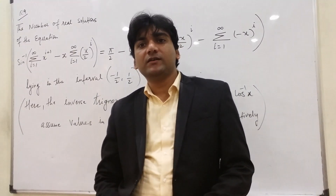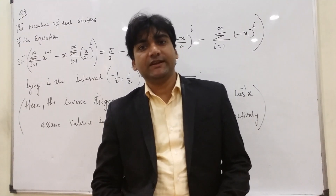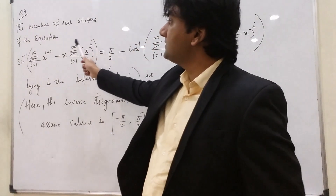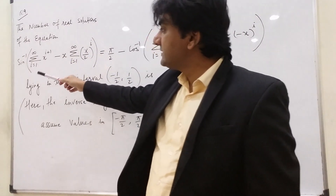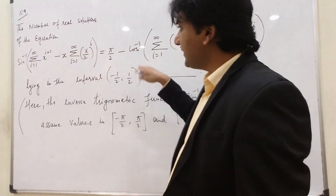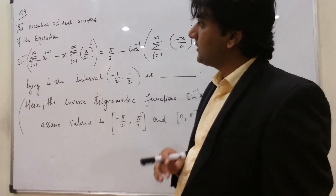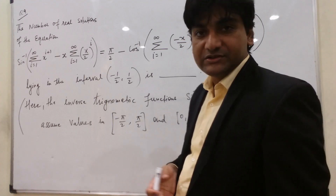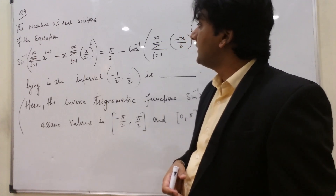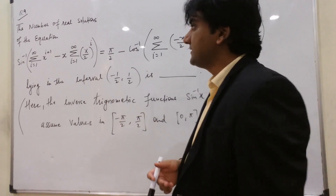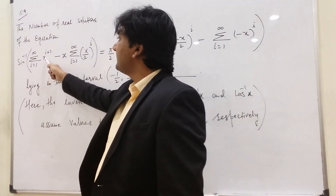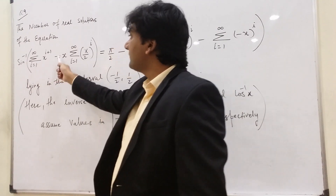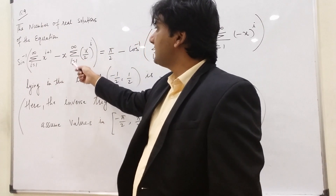Now we are going to learn question number 9 from 2018 JEE Advanced Paper 1 — the number of real solutions of the equation sine inverse. In this question they have applied the concept of inverse trigonometric functions and the summation of geometric progression to infinity. It's a mixed concept: sine inverse, summation of x raised to i plus 1, with i equals 1 to infinity.